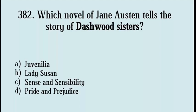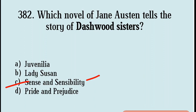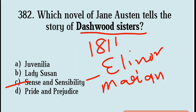Next question: Which novel of Jane Austen tells the story of the Dashwood sisters? Options are Juvenilia, Lady Susan, Sense and Sensibility, Pride and Prejudice. Correct answer: Option C, Sense and Sensibility, published 1811. It was published anonymously. It tells the story of the Dashwood sisters: Elinor, Marianne, and Margaret.